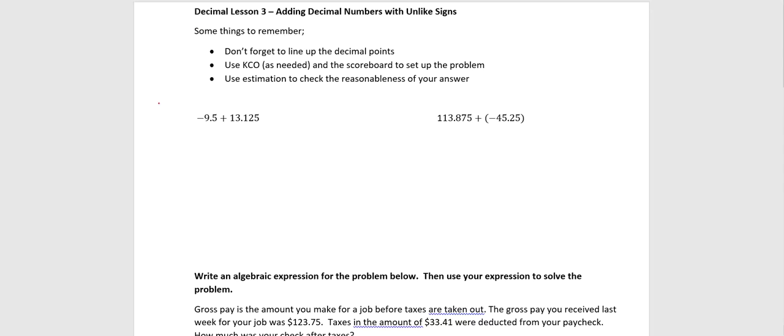So let's actually start with that. If we were to estimate negative 9.5, well, don't forget, 0.5 means we round up, so that's getting us further away from zero. That would be negative 10, and we're adding to that 13.125. That's going to be rounded down to 13.